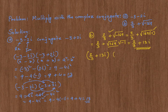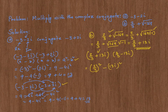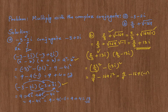The conjugate of 2 thirds plus 13i is 2 thirds minus 13i — I just change the sign. Now using the difference of squares formula, it's going to be 2 thirds whole squared minus 13i whole squared. Two thirds squared is 4 over 9, minus 13i squared is 169i squared, which equals 4 over 9 minus 169 times negative 1, giving us 4 over 9 plus 169.